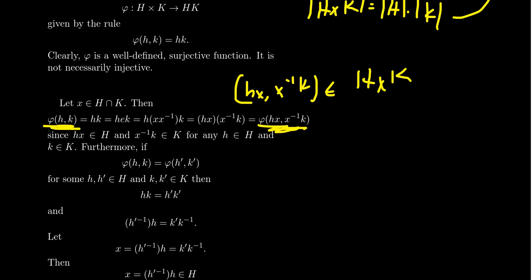So φ of (h, k) is equal to φ of (hx, x inverse k). Assuming x is a non-identity element, this would show us that this thing is not going to be one-to-one. The images of these two ordered pairs is the same under this map φ. Now we want to show that whenever two ordered pairs have the same image with respect to φ, we can uniquely identify an element x inside of H intersect K.